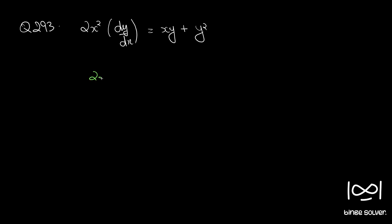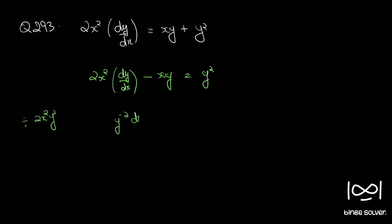Rearranging, we get 2x squared dy by dx minus xy equal to y squared. Now if you divide throughout by 2x squared y squared, you get y raised to minus 2 dy by dx minus 1 by 2x times y raised to minus 1 equal to 1 by 2x squared.